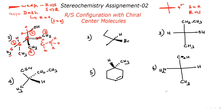Now do rotation: one, two, three. During the rotation, forget the fourth one — one, two, three. This is clockwise, therefore R. The fourth group is in dash, R configuration. What is the answer? R is the answer. Simple.